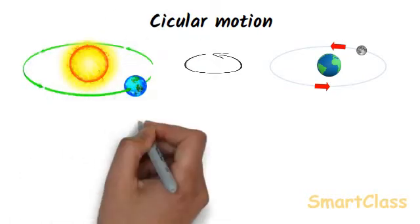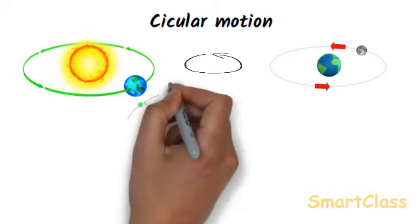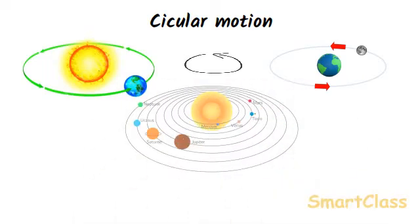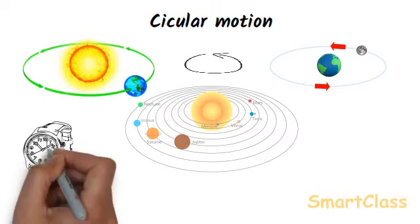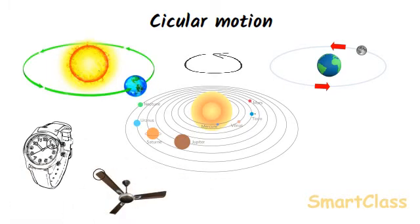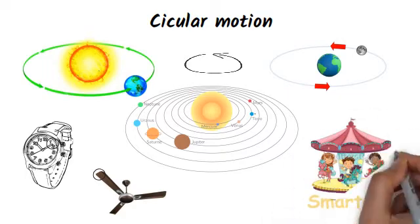Similarly, the movement of earth around the sun and also the movement of other planets around the sun is also in a circular motion. The other examples of circular motions are tip of hands of watch, the end of the blades of a fan and a child sitting on a merry-go-round.